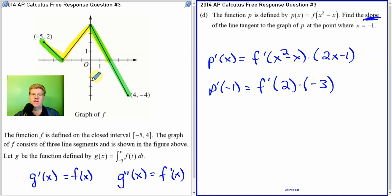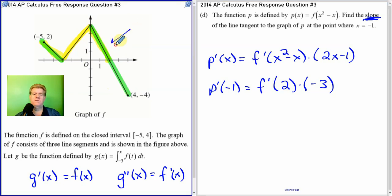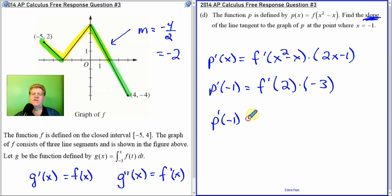Well, here's our function of f. f' means the derivative. The derivative at two. Well, the derivative is the slope. So what's the slope of this line? So if you go down four and over two. Down four and over two. So the slope is negative four over two, which is just negative two. So P'(-1) equals negative two times negative three, which equals six. And that is your answer.